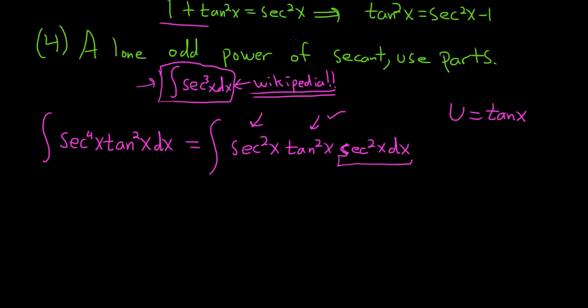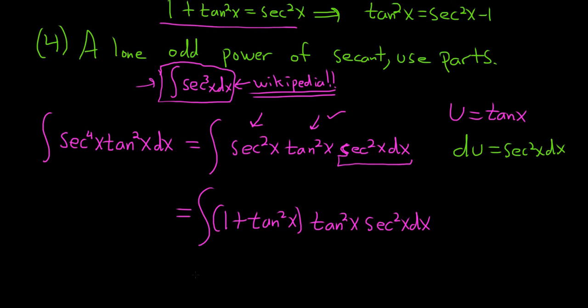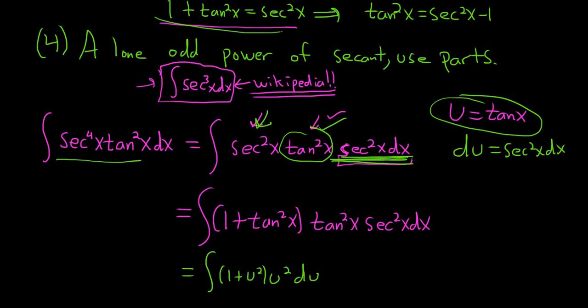We know secant squared is 1 plus tan squared. So this equals the integral of 1 plus tan squared x, tan squared x, secant squared x dx. Now we're ready to make our substitution because we have all our tangents here. Du is secant squared x dx. Now let's make that u sub. This will be equal to 1 plus u squared, u squared du. We use an identity to make it a tangent, and now we're good.